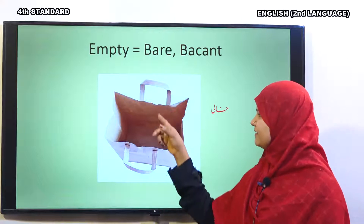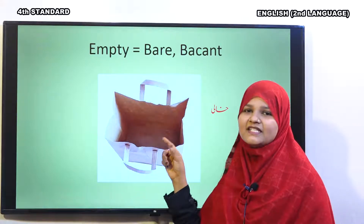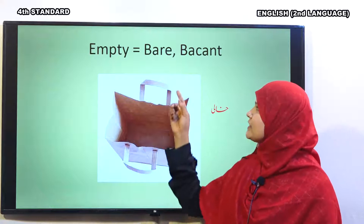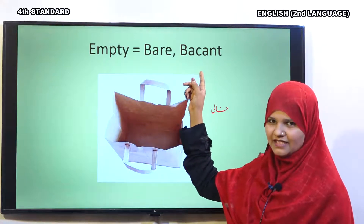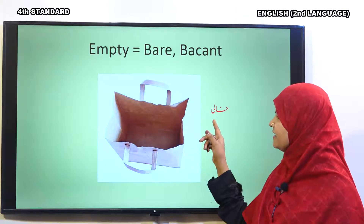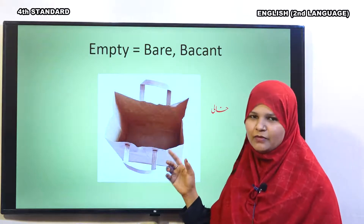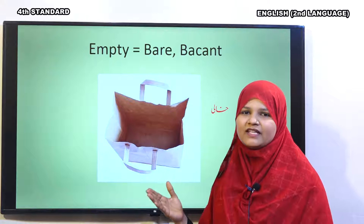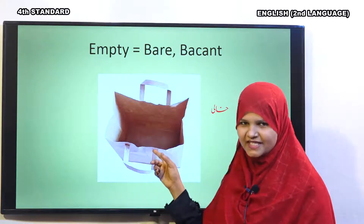Next, empty. This bag is empty. There is nothing in the bag. So, it is called bare or vacant. It is vacant, means khali. When Gopu brought the onions, the bag was completely empty. That is empty.